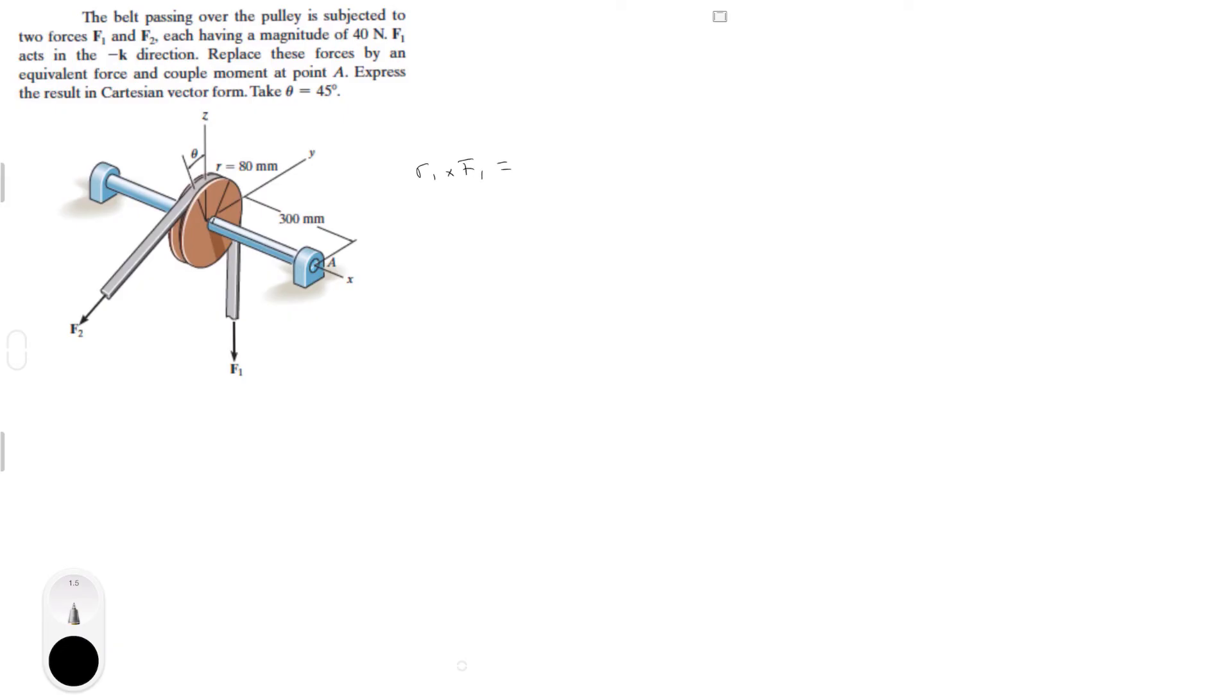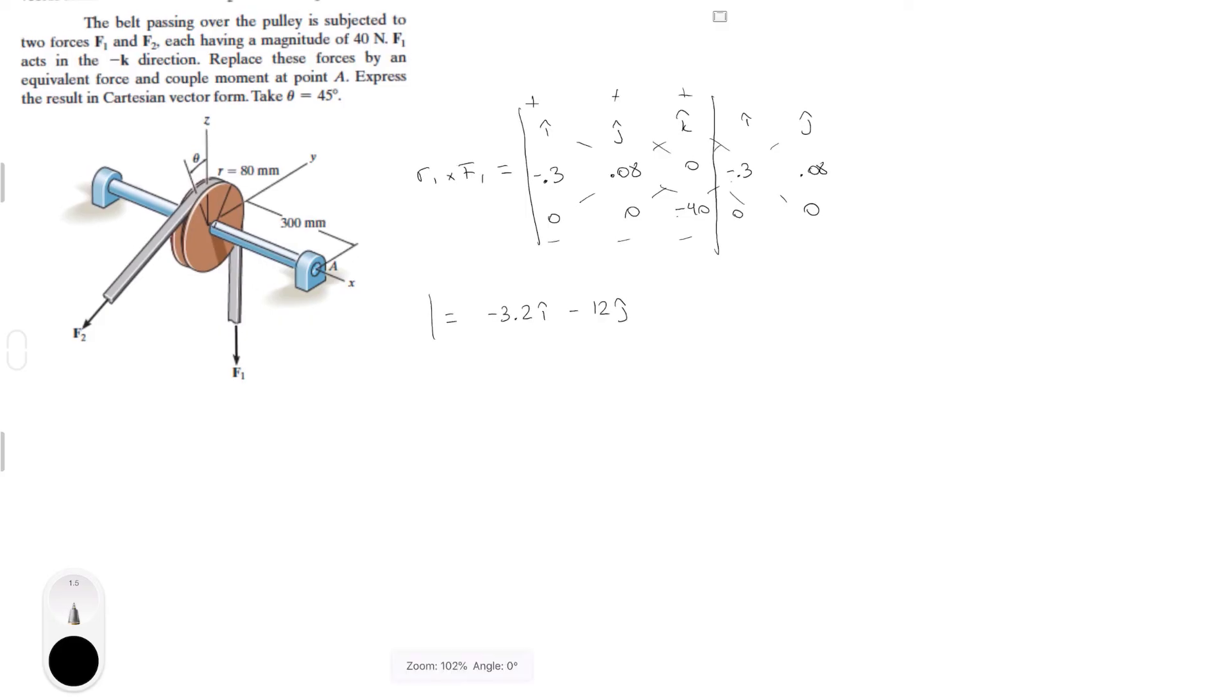R1 cross F1 equals the determinant with I, J, K in the first row, minus 0.3, 0.08, 0 in the second row, and 0, 0, minus 40 in the third row. Rewrite the first and second columns. Now we do the positive diagonals. The first one is 0.08 times minus 40, which is minus 3.2I. The second and third are zero. Negative diagonal 1 is 0, negative diagonal 2 is 0. Negative diagonal 3 is 40 times 0.3, which makes it minus 12J. We have our first vector.